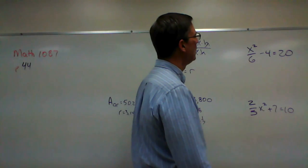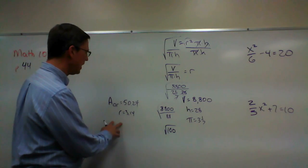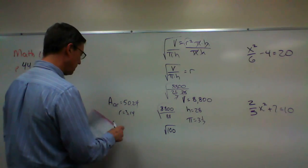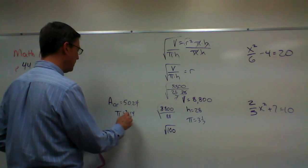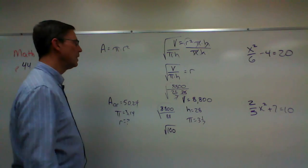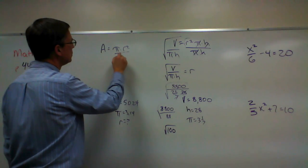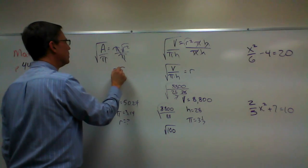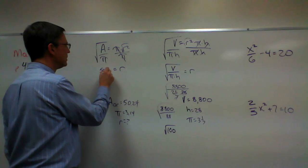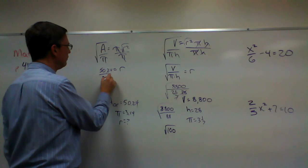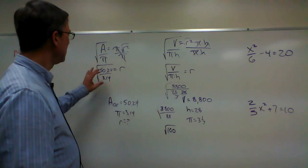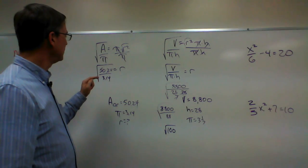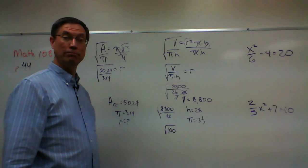Let's go over here and look at another type. Area of a circle — we're asked to find the radius. Area of a circle is pi times the radius squared. If I'm solving for the radius, I'm going to divide both sides by pi, and then do the square root of both sides. So r equals the area: 50.24 divided by 3.14, and then we'll do the square root of that. Do the math inside first, take the answer, do the square root, and you've got the answer.